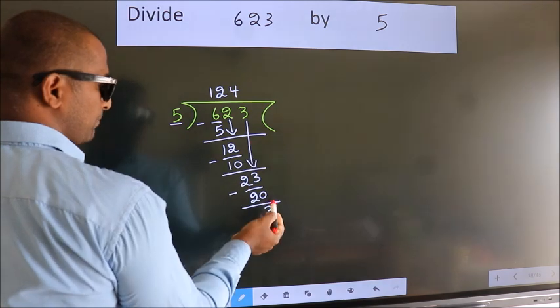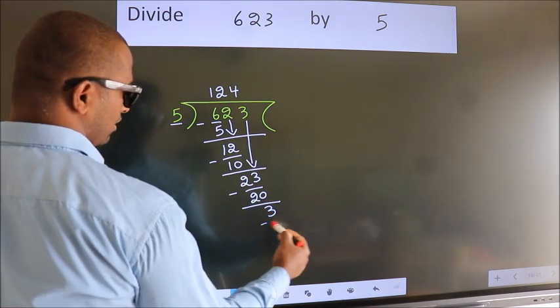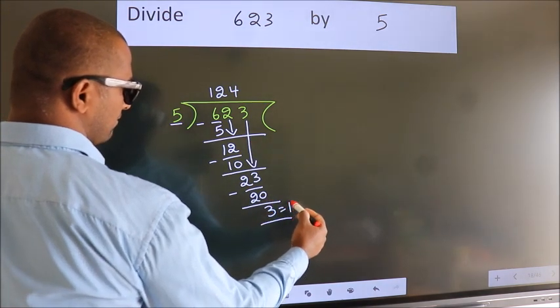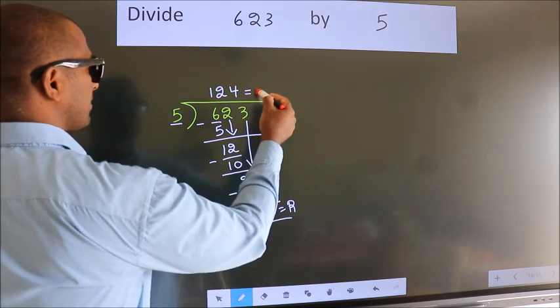No more numbers to bring down. So we stop here. This is our remainder. This is our quotient.